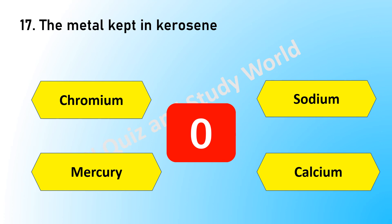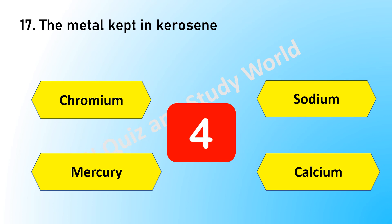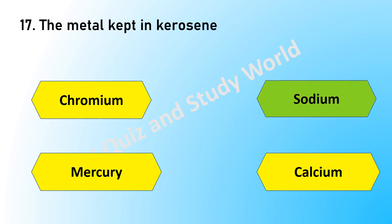The metal which is kept in kerosene is — is it chromium, sodium, mercury, or calcium? The answer is sodium.